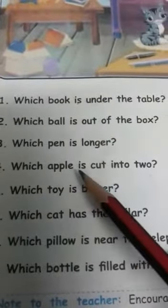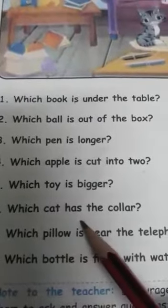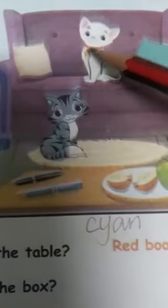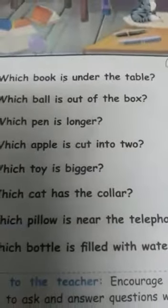Which apple is cut into two? Which one is cut? Green or red? Yes, red. Red apple is cut into two. Which toy is bigger? Teddy bear or duck? Yes, teddy bear. Teddy bear toy is bigger. Which cat has the collar? See here, that is the collar. White cat. White cat has the collar.